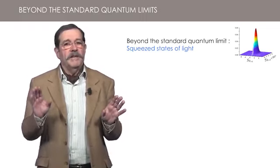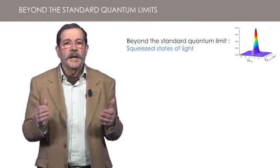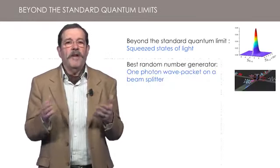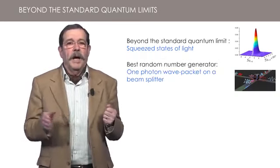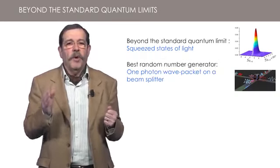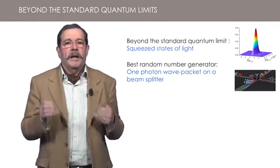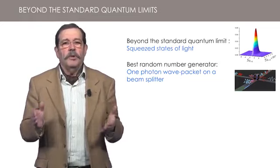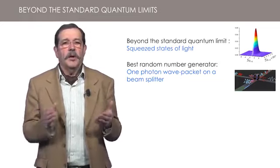Another example of a limit in classical optics, which can be surpassed in the context of quantum optics, is the behavior of a wave packet on a beam splitter. In Quantum Optics 1, I show how the use of one photon wave packets impinging on a beam splitter can make an ultimate random number generator better than what is possible with quasi-classical wave packets.